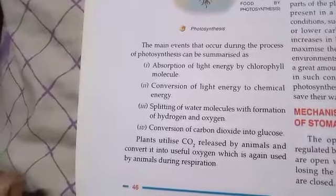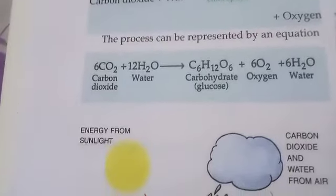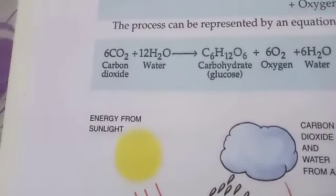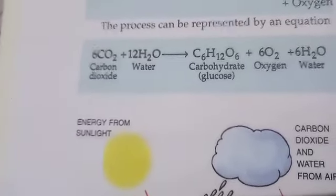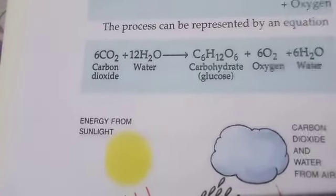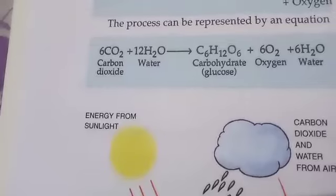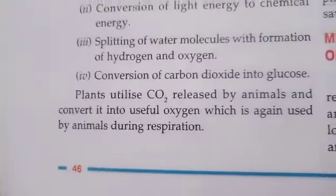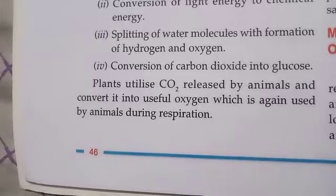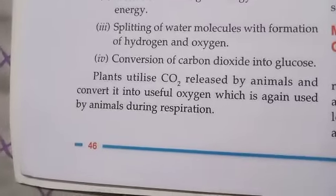The splitting of water produces hydrogen and oxygen. The chemical equation is: carbon dioxide + water → glucose + oxygen + water. Glucose is the food required by the plant. Oxygen and water are released as end products. Plants utilize carbon dioxide released by animals and convert it into useful oxygen.